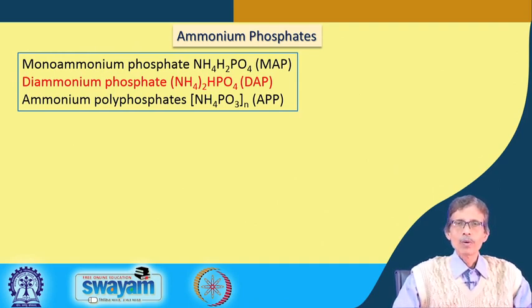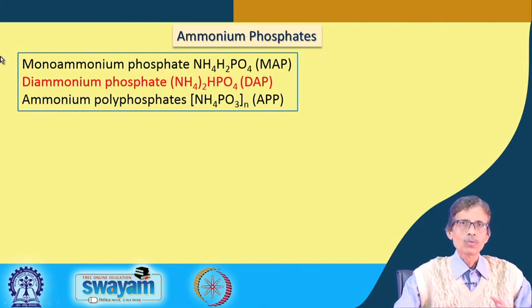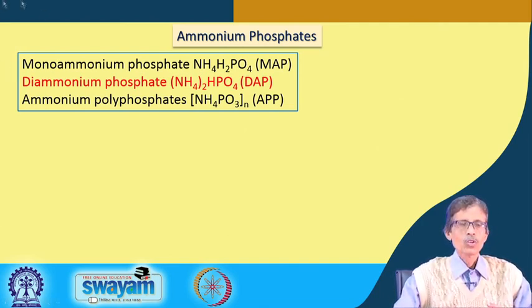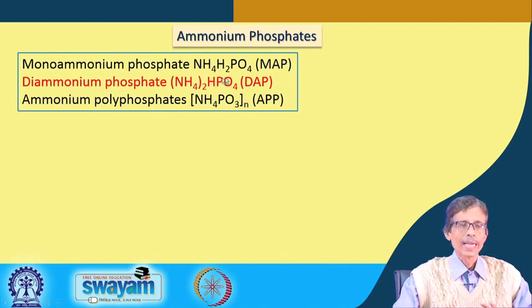Phosphate is everywhere and is required for plant growth. If we substitute only one of the 3 protons in phosphoric acid H3PO4 - replacing one hydrogen with the ammonium ion - we get mono ammonium phosphate.